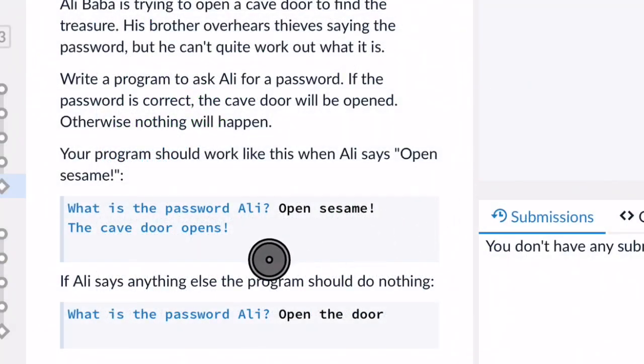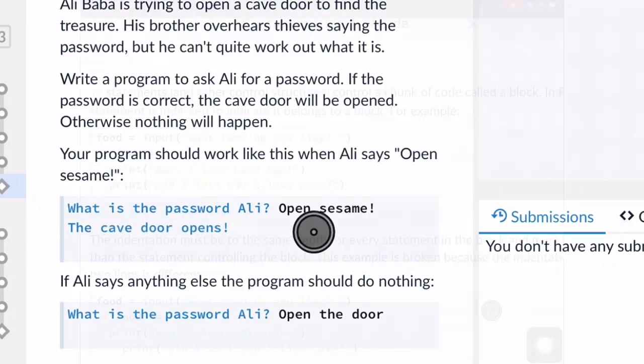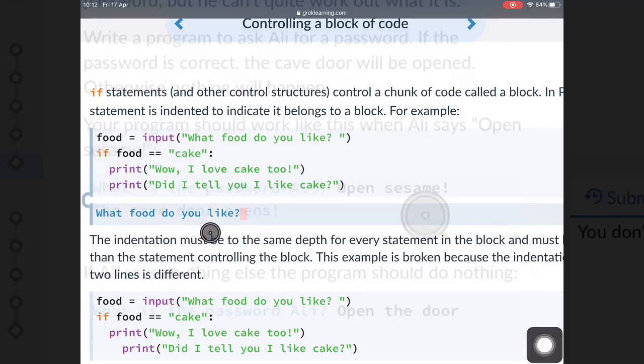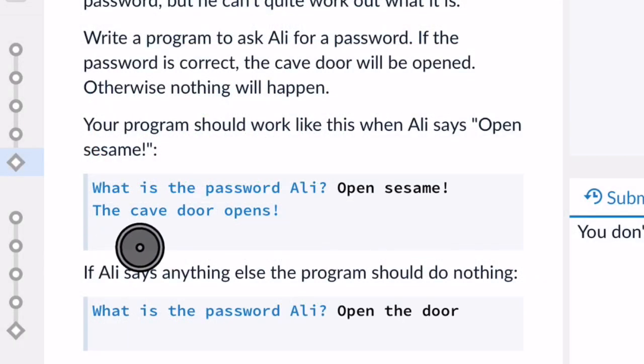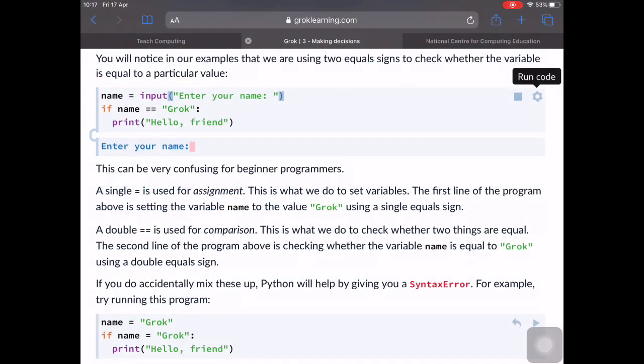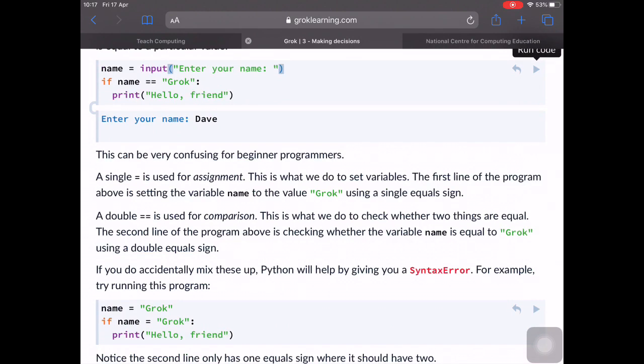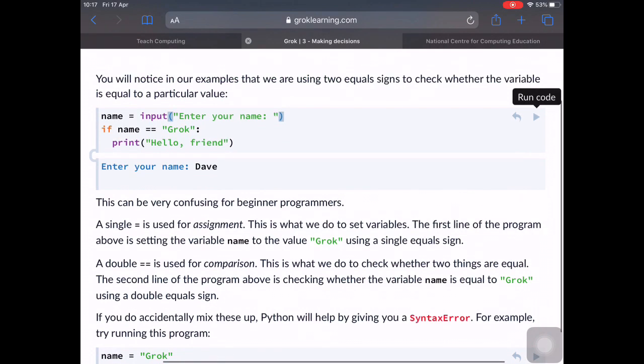Your first task, the first diamond on this section three, wants an input that says what is the password alley. So your code should produce that, and then you're expected to type open sesame. This is like saying food equals input, what food do you like. So you're wanting what is the password alley. If they put open sesame, the cave door open should be printed. If they put anything else, then nothing should be printed out. This is a bit like the previous one where if I put my name as Dave, there's no code in there after Dave. It's looking to see if it's grok. If it's grok, it prints something. If it's Dave, it prints nothing.